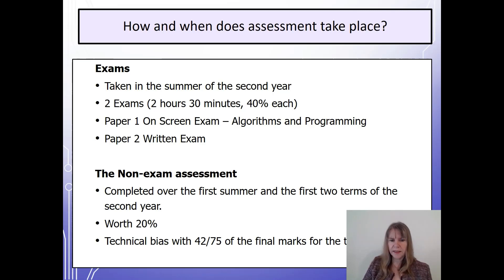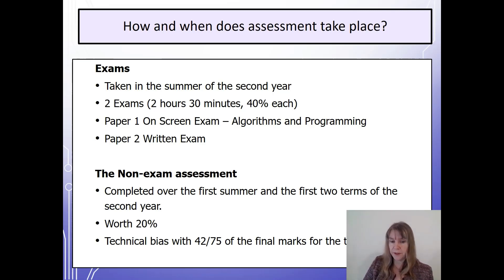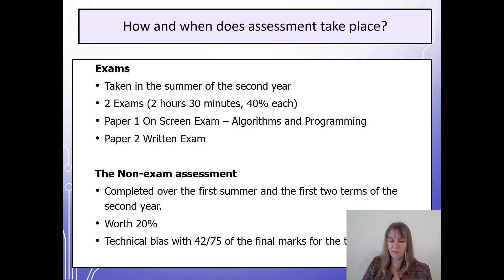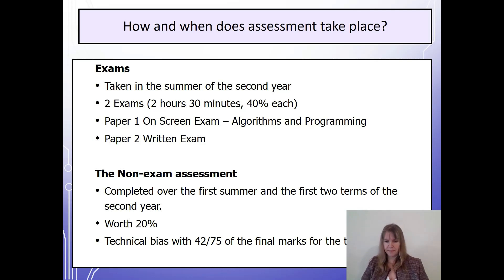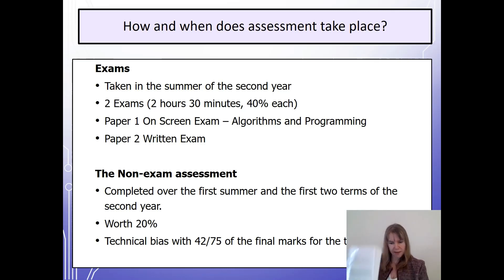So how and when does assessment take place? Well, there are two exams that you would take at the end of the second year. They are both worth 40%. One is on the computer and involves algorithms and programming, and the other is a written exam involving the more technical aspects of the course. In addition to that, there is the non-exam assessment. This is worth 20% and you will end up producing something that looks a bit like that.